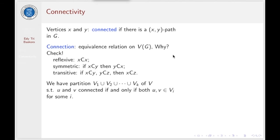In this case, the set of vertices of G will be partitioned by this relation. We have a partition V1, V2, up to VK, such that U and V are connected if and only if both U and V belong to some VI.